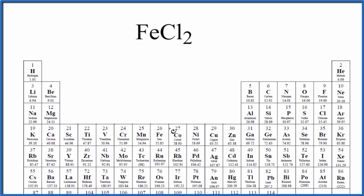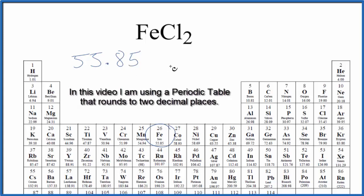On the periodic table, iron is 55.85 and the units are grams per mole. I won't write that now. Let's write that at the end. We have one iron atom.